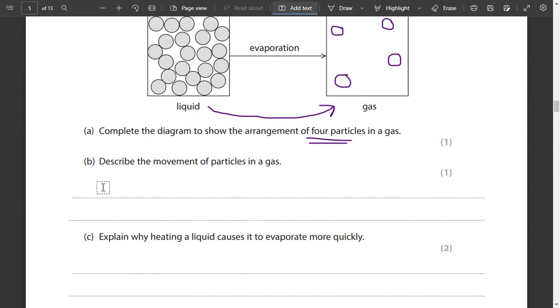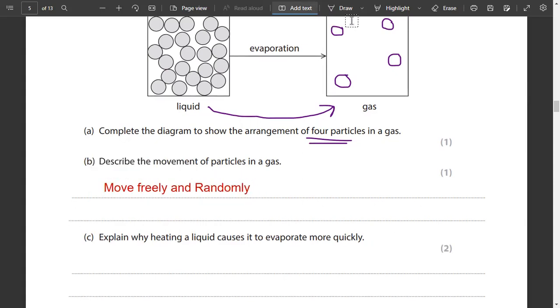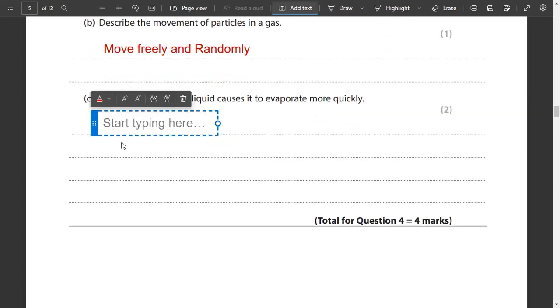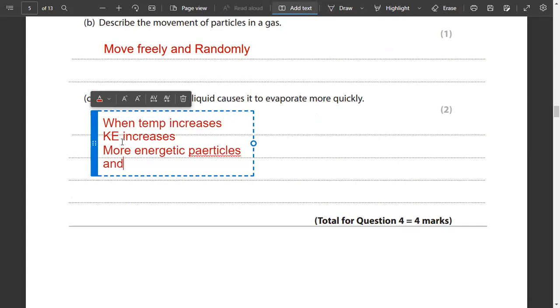Describe the movement of particles in a gas. Gas particles move freely and randomly. Explain why heating a liquid causes it to evaporate more quickly. Why does the substance evaporate more quickly? Remember that when temperature increases, kinetic energy increases. More energetic particles are present and they escape the surface of the liquid.